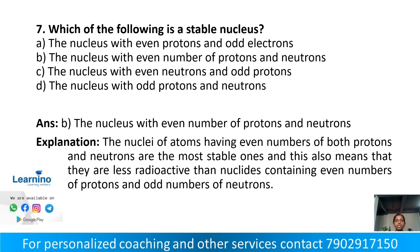Which of the following is a stable nucleus? Option A: nucleus with even protons and odd neutrons. Option B: nucleus with even number of protons and neutrons. Option C: nucleus with even neutrons and odd protons. Option D: nucleus with odd protons and neutrons. The most stable nucleus has even numbers of both protons and neutrons. The correct answer is Option B.